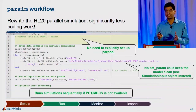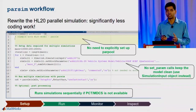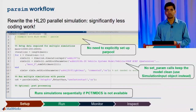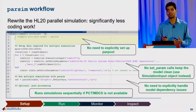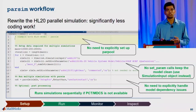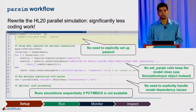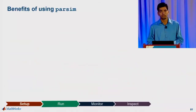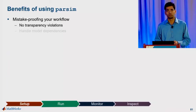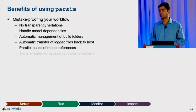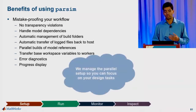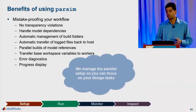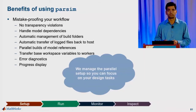All your changes are nicely encapsulated into the simulation input object, so the model remains clean. parsim handles all the complexity of model dependencies and sends any files necessary for the simulation to run on the parallel worker. There are a lot more benefits of using parsim — this is the big list of things that are now automated. It's basically all about mistake-proofing your workflow and automating the parallel setup so you can focus on your design tasks instead.